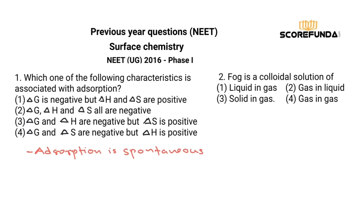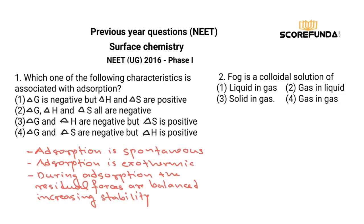Adsorption involves the collection of one substance on the surface of another and is a spontaneous process. Adsorption is exothermic — heat is liberated. During adsorption, the residual forces on the surface are balanced, increasing stability. When a foreign body is adsorbed, the surface residual forces are satisfied, which is why stability increases.